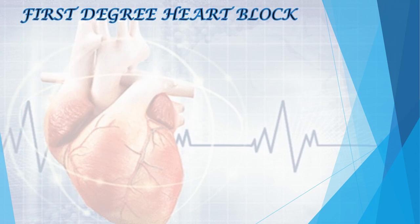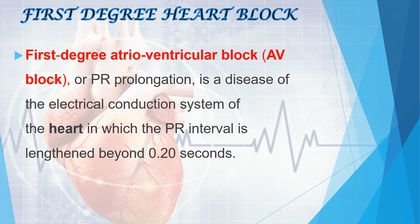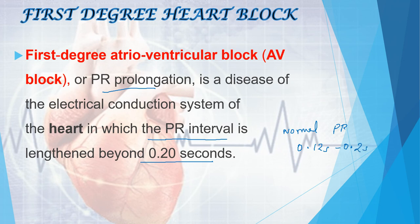First we see about the first degree heart block — that is first degree atrioventricular block, or AV block, otherwise known as PR prolongation. It is a disease of the electrical conduction system of the heart in which the PR interval is lengthened beyond 0.2 seconds. The normal PR interval is 0.12 to 0.2 seconds, corresponding to 3 to 5 small boxes on the ECG paper. When it lengthens beyond 0.2 seconds, we record first degree heart block.